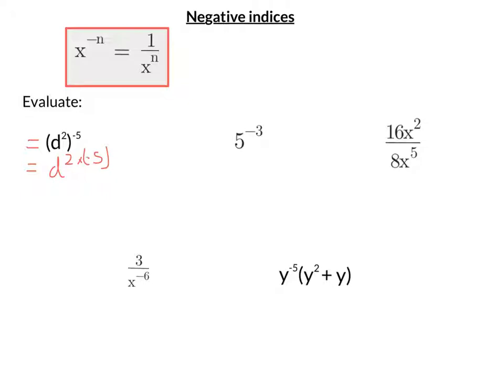So we've got 2 times negative 5 is negative 10. So there's d to the negative 10. Now using the rule up there, if I have a negative power, I can write that as 1 over d to the positive. So 1 over d to the 10.